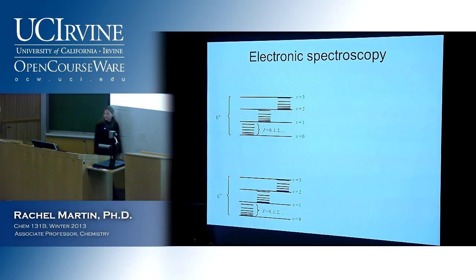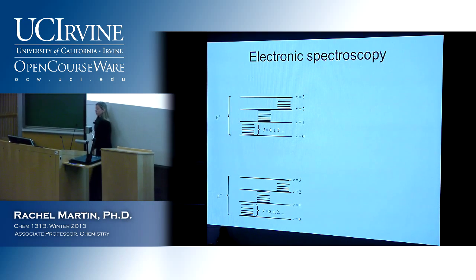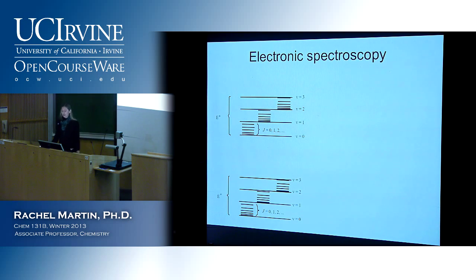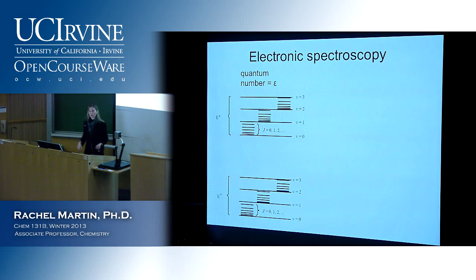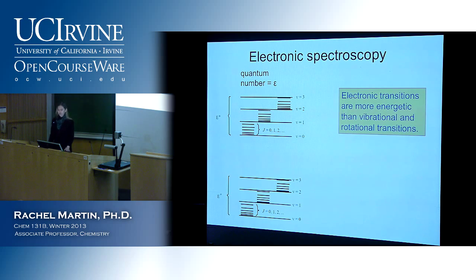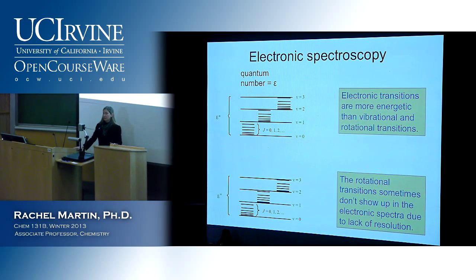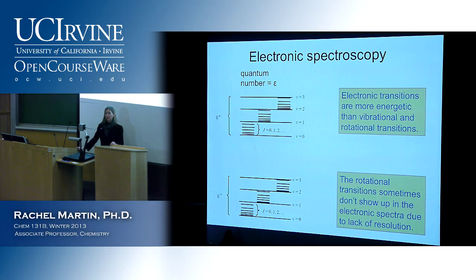Here's what that structure looks like: we've got vibrational levels within each electronic state. Notice they're all evenly spaced because we're using the harmonic oscillator approximation — that's not true for the rigid rotor states. As we saw with vibrational spectroscopy, when we excite those high-energy transitions, we get all the lower ones coming along with it. You'll definitely see fine structure from vibrational states in your electronic spectra, but you might not see fine structure from rotational states because we don't have infinite resolution.